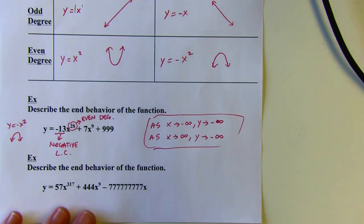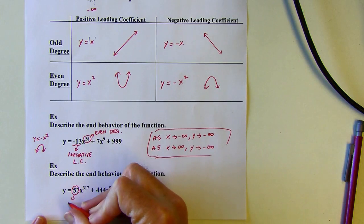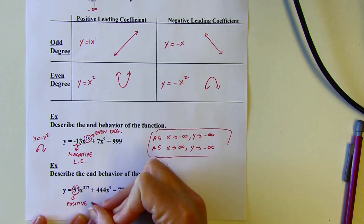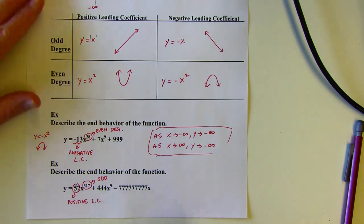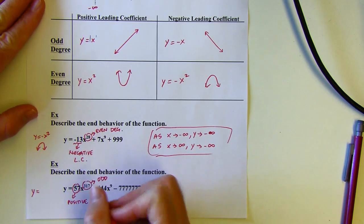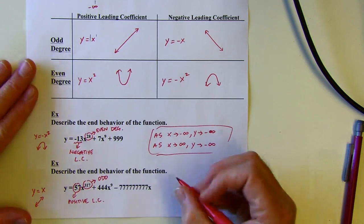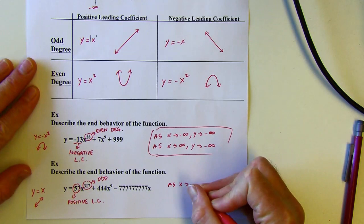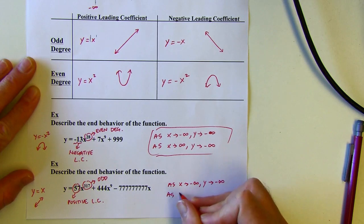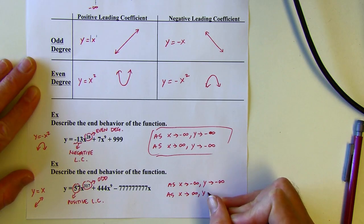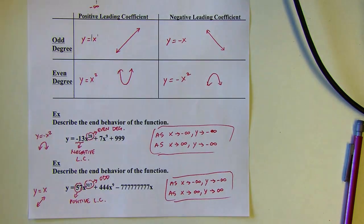One more. Even without the chart, I look at this and think: positive leading coefficient and odd degree. The simplest equation with those characteristics is y equals x. So as I go left, I go down; as I go right, I go up. Therefore, as x approaches negative infinity, y approaches negative infinity. And as x approaches positive infinity, y approaches positive infinity — as you go right, you go up. And that's it for today. See you next time.